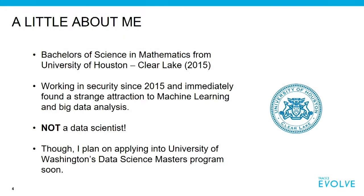A little bit about me: I have a bachelor's of science in mathematics from the University of Houston Clear Lake, graduated 2015. Straight out of college, I started working in security and I immediately found a strange attraction to machine learning — that's a tip of the hat to anyone who's taken a chaos theory course, referring to a strange attractor. I'm not a data scientist, but I do plan on eventually applying to the University of Washington's Data Science Master's program.